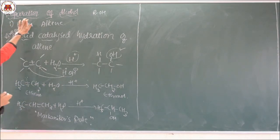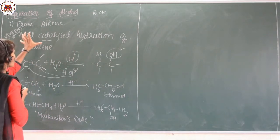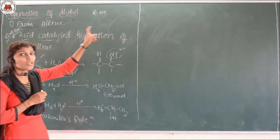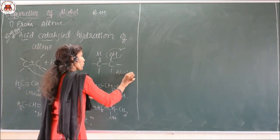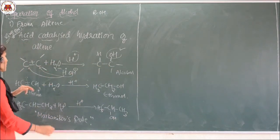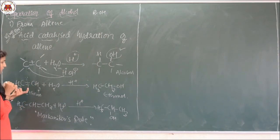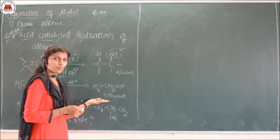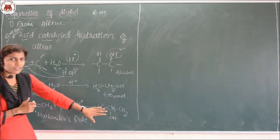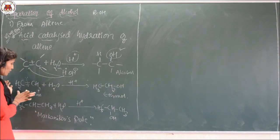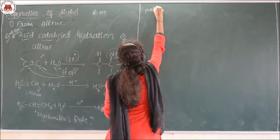We want to prepare the alcohol by using the alkene. The first method is acid catalyzed hydration of the alkene. Whenever alkene is treated with an acid in presence of water, we get the alcohol as a product. This is a symmetrical alkene example. When unsymmetrical alkene is taken, alcohol is also prepared and this method is based on Markovnikov's rule.